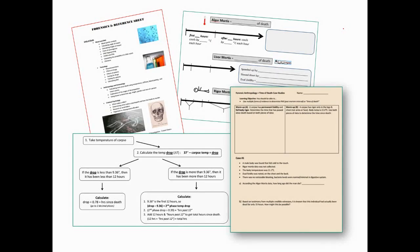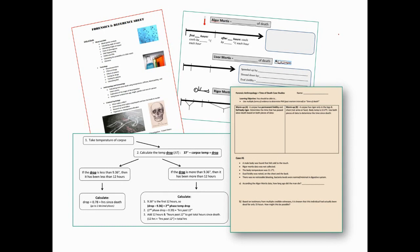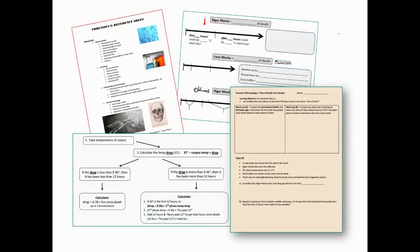Here's what you're going to need: your reference tables, your timeline helper sheet, the algor mortis flowchart, and the case study worksheet — either a printed PDF or the electronic editable copy. It looks something like that, with 'Time of Death Case Studies' at the top.